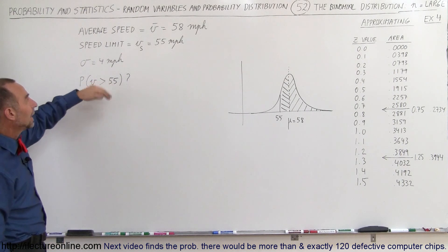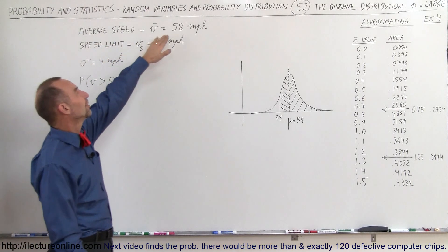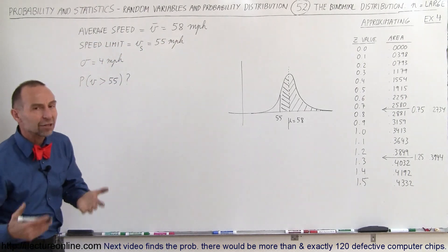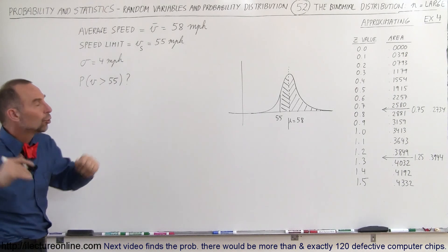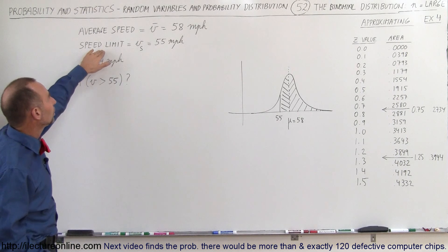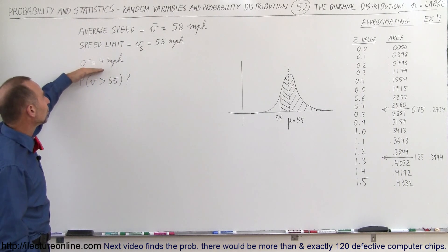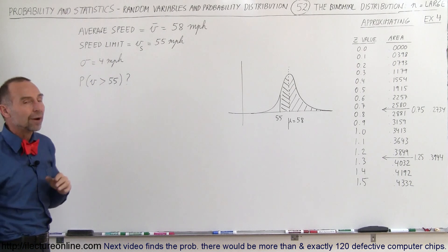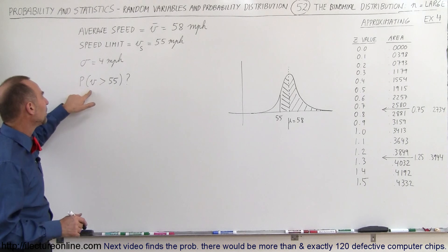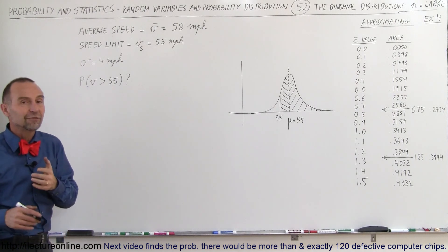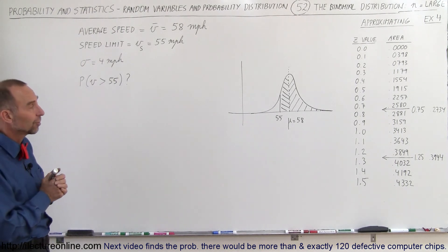If we do an average and see that the average speed of the cars is 58 miles per hour, which would be the expected value if we assume a normal distribution, and we know that the speed limit is 55 miles per hour and the standard deviation of the speeds measured is 4 miles per hour, then what would be the probability that a car is driving faster than 55 miles per hour as they're driving past us?